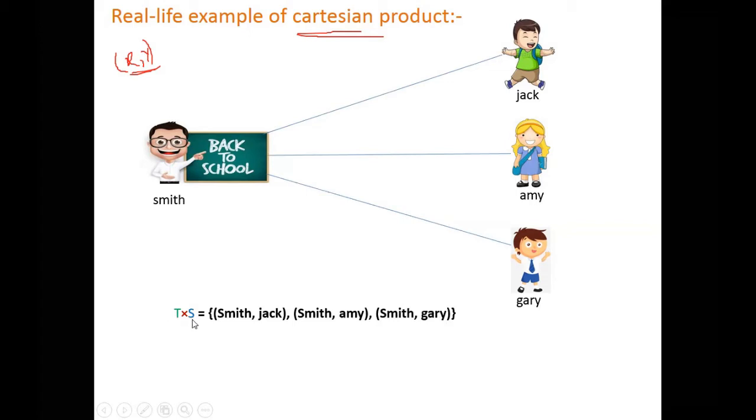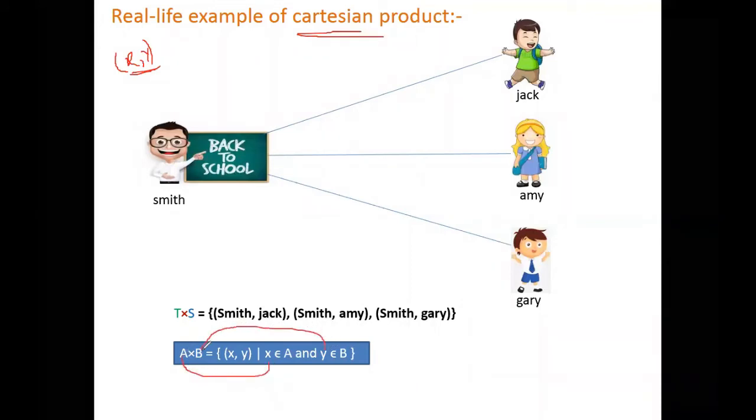From here we can say that Cartesian product of A cross B is (X comma Y), where X belongs to the first set and Y belongs to the second set. Let's continue.